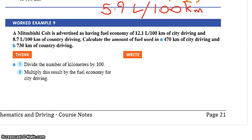Okay, this example, worked example nine. This time they are giving us the fuel economy rate of 12.1 litres per 100 kilometres in city driving and 8.7 litres per 100 kilometres in country driving. You use less in country driving because you can get to one speed and stay stable. Calculate the amount of fuel used in 470 kilometres of city driving.